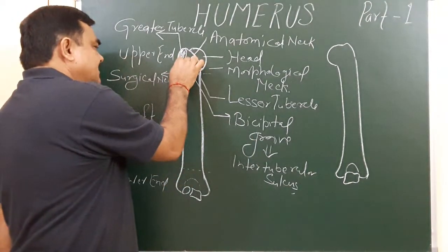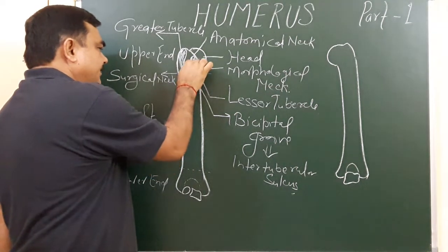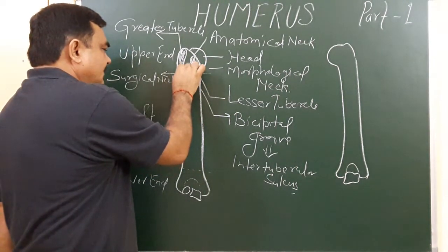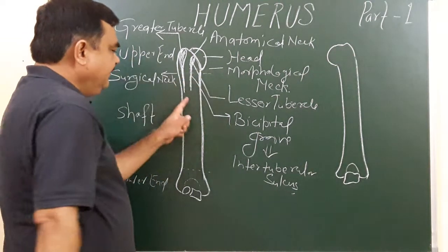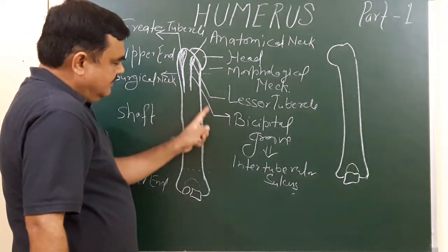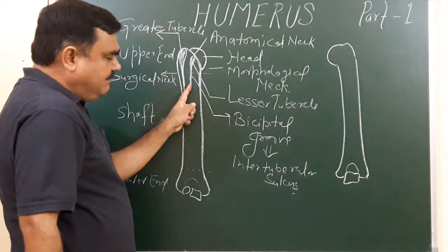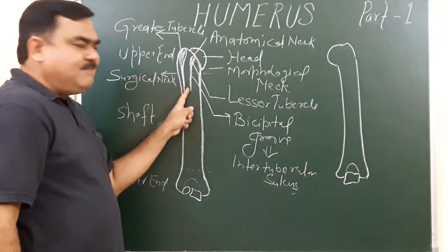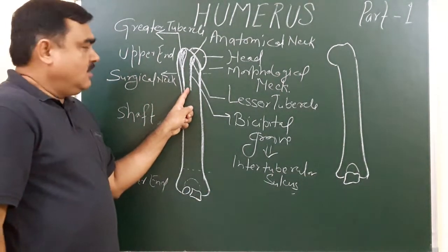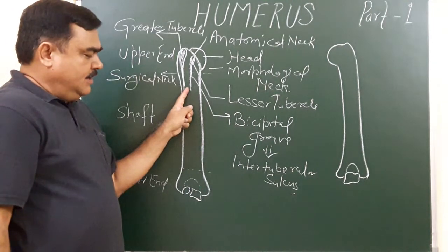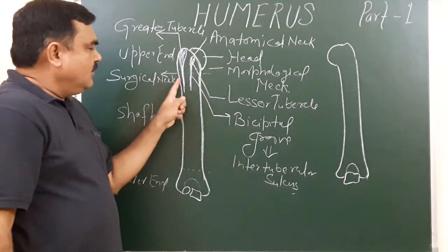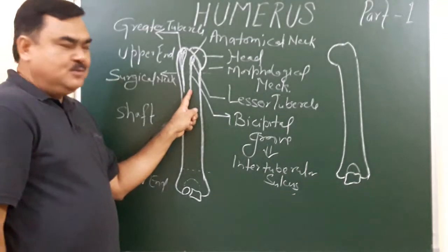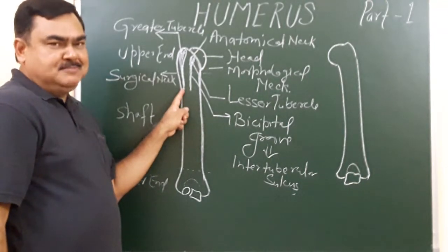If you trace this groove downward, you will find there is a medial lip, a lateral lip, and a floor. The central part is the floor of the inter-tubercular sulcus or bicipital groove. This is the medial lip of the bicipital groove, and this is the lateral lip of the bicipital groove.